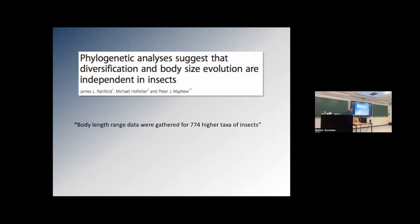Even in a group like butterflies, we don't even have compiled data for a trait as simple as body size information. Even in the most well-known group of insects, we don't have a body size dataset, which remains a mystery to me. When I hear the term 'phenomics' — in insects, we are not even at the phenotypic level. With simple traits we don't have much data, and with more complex shapes it's even lower.